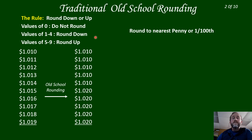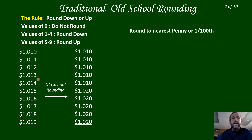Traditional old-school rounding — you'll recall one to four you round down, five to nine you round up. When there's a zero you're not rounding it, so it's not really being changed. If you look at these values, here's the zero — we're not changing it at all, it just stays the same. Here we have a value of one, so we just change it to a zero and the previous value doesn't change — that's called rounding down. Same with two, three, and four — round down on these values.